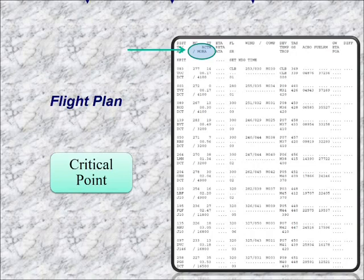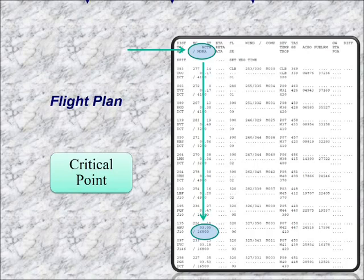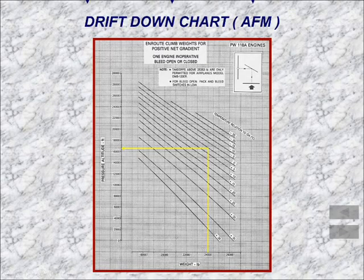If we take a look at this flight plan example, right here you've got the MORA shown — that would be our minimum off-route altitude, our grid MORA. You find the highest critical point along the way, and here it is down here. It shows us that it's 16,800 feet.